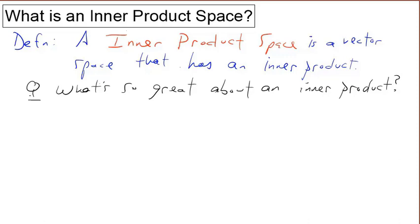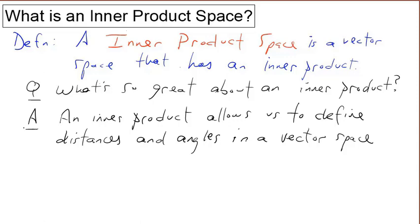An inner product is useful for defining distances and angles in a vector space. It is exactly the structure we need to do that. Distances and angles are very important in certain applications. We'll explore such applications later in this video, but let's first describe what an inner product is.